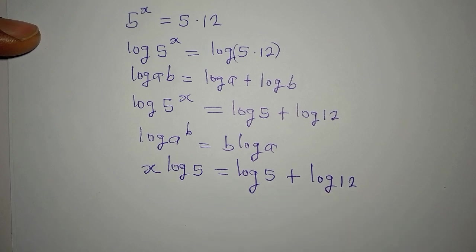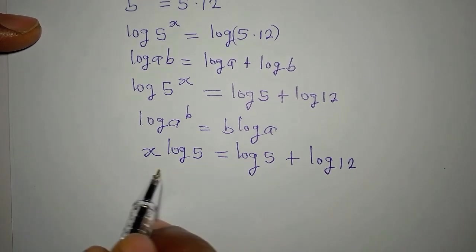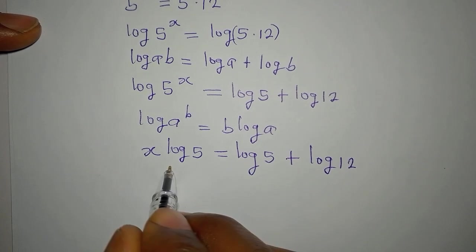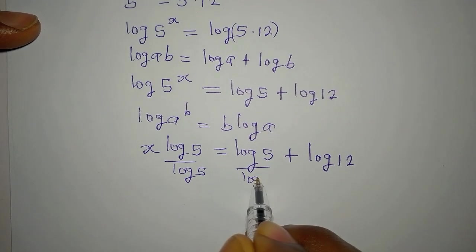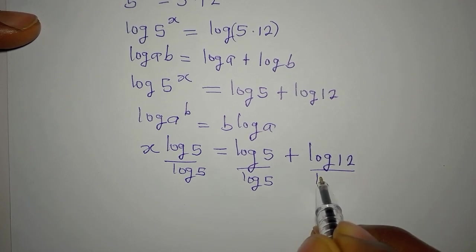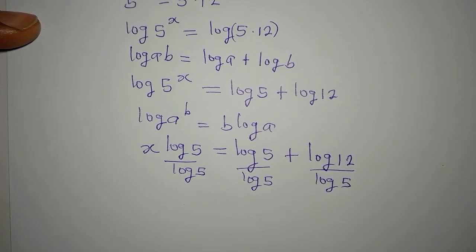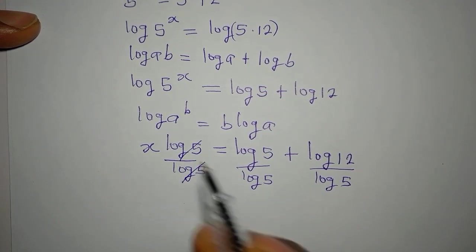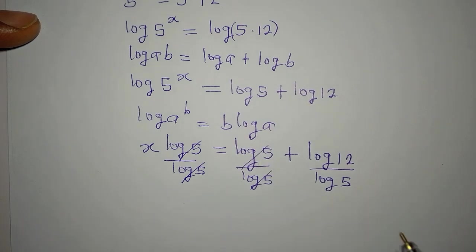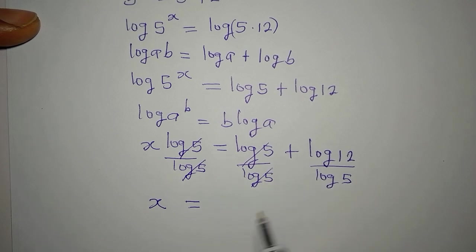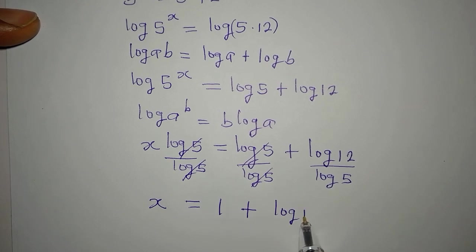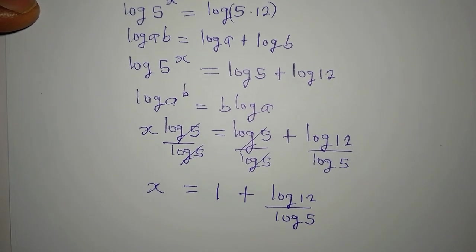Someone will be tempted to say log 5 plus log 12 gives us log 17, but that is not correct. Now we are trying to make x the subject, so we have to divide all through by log 5. Divide this by log 5 and divide this by log 5. Log 5 divided by log 5 cancels, so we have x equal to 1 plus log 12 over log 5.